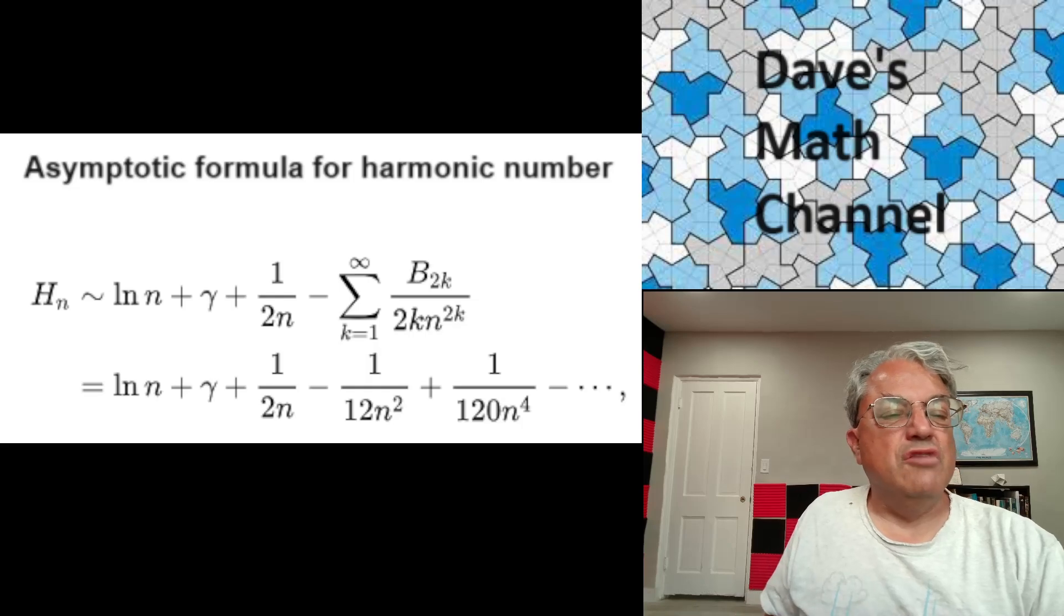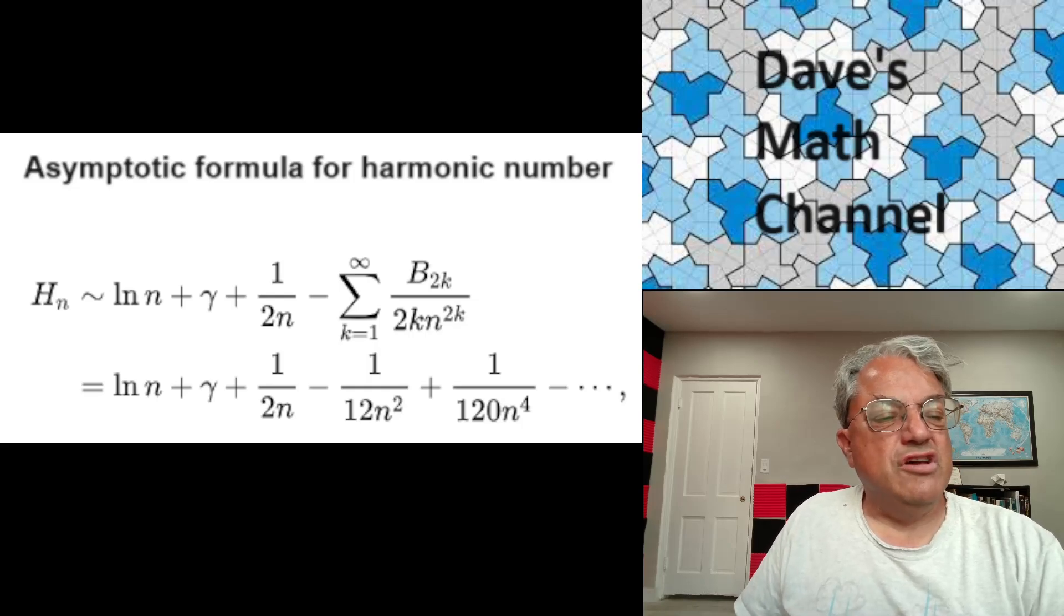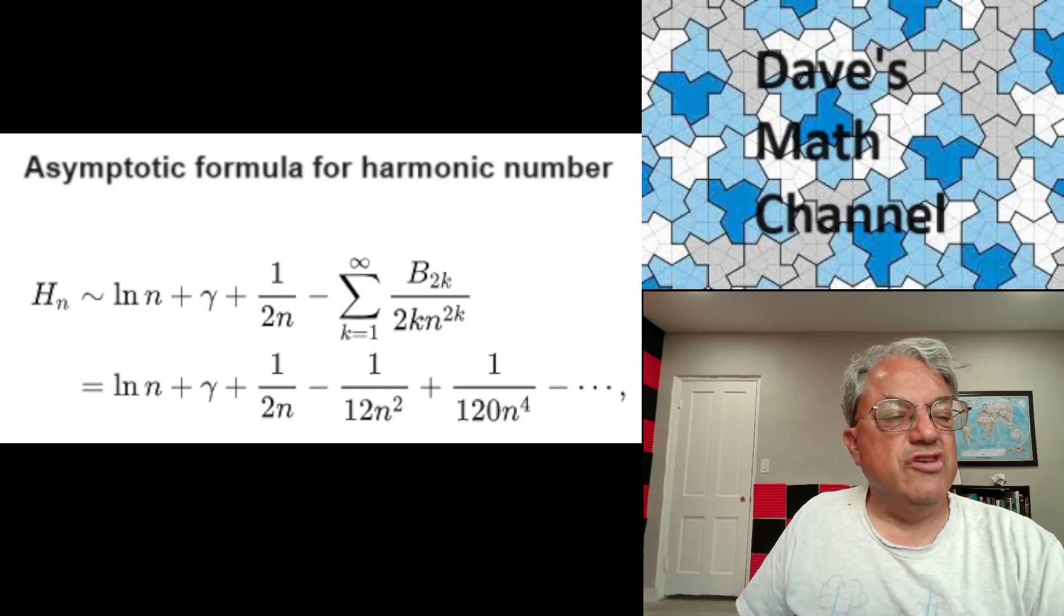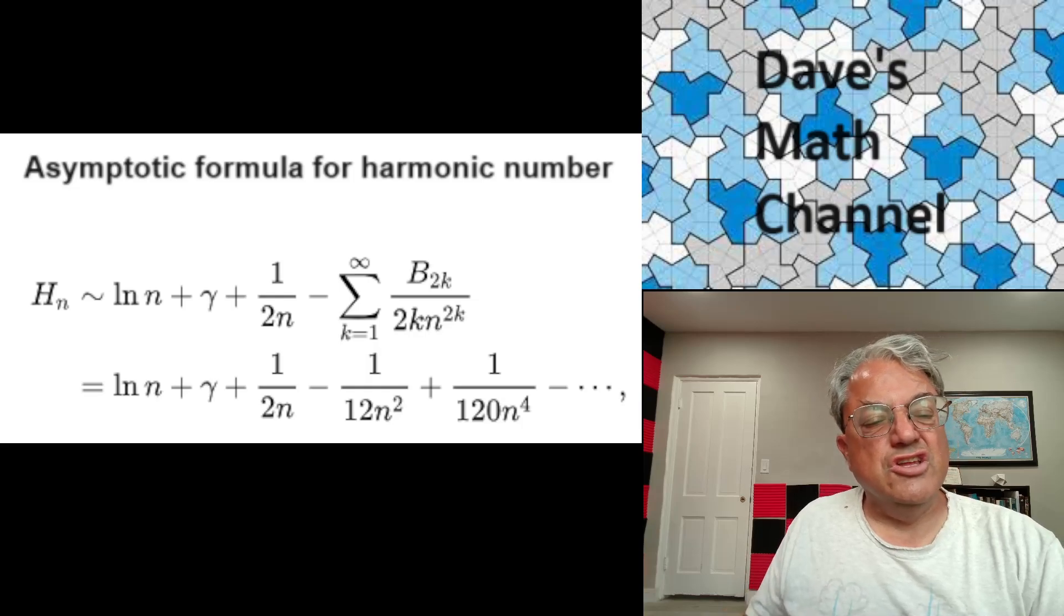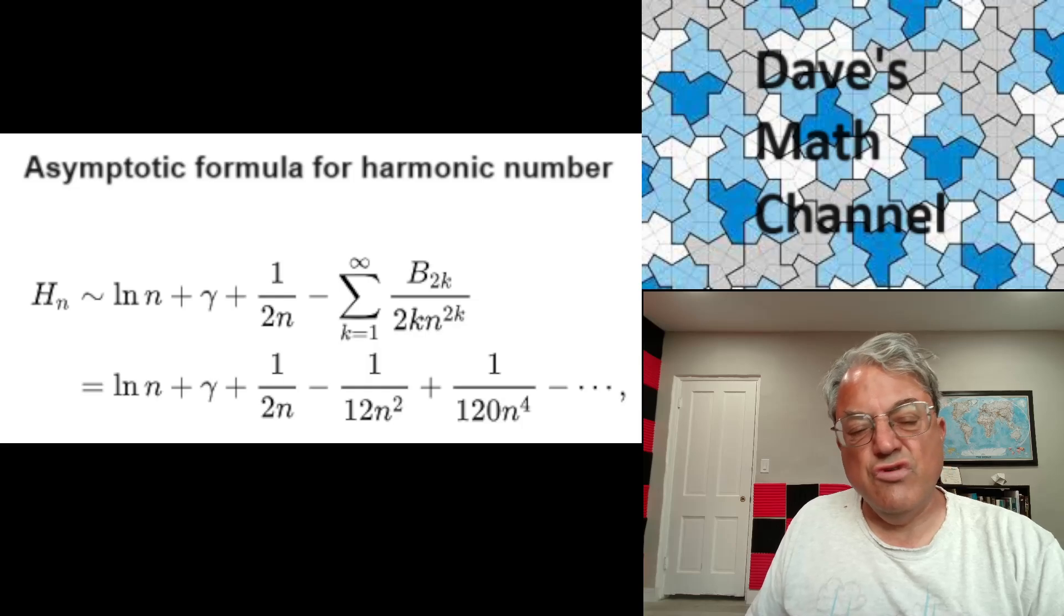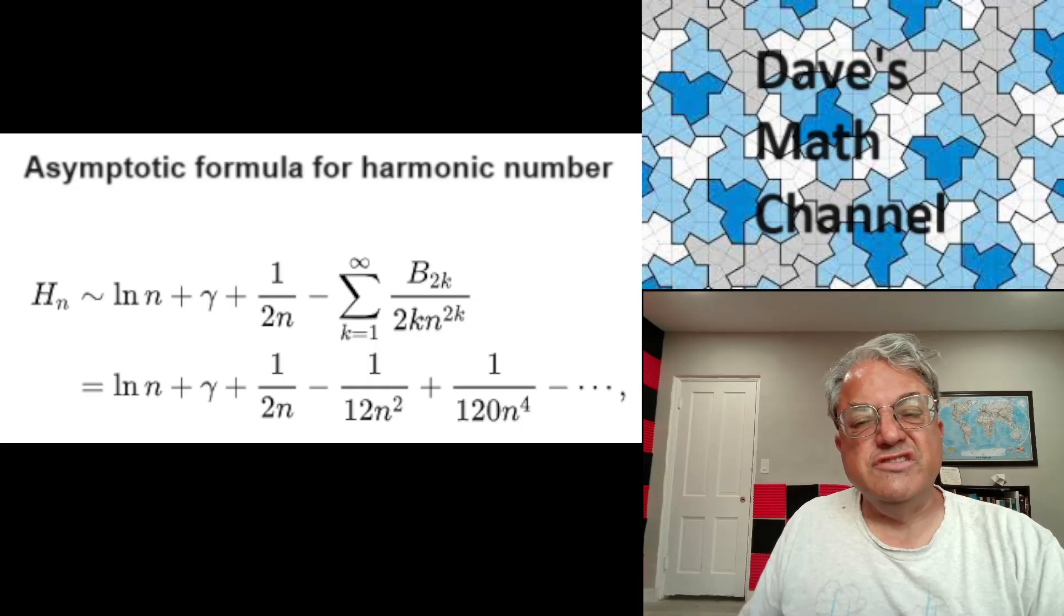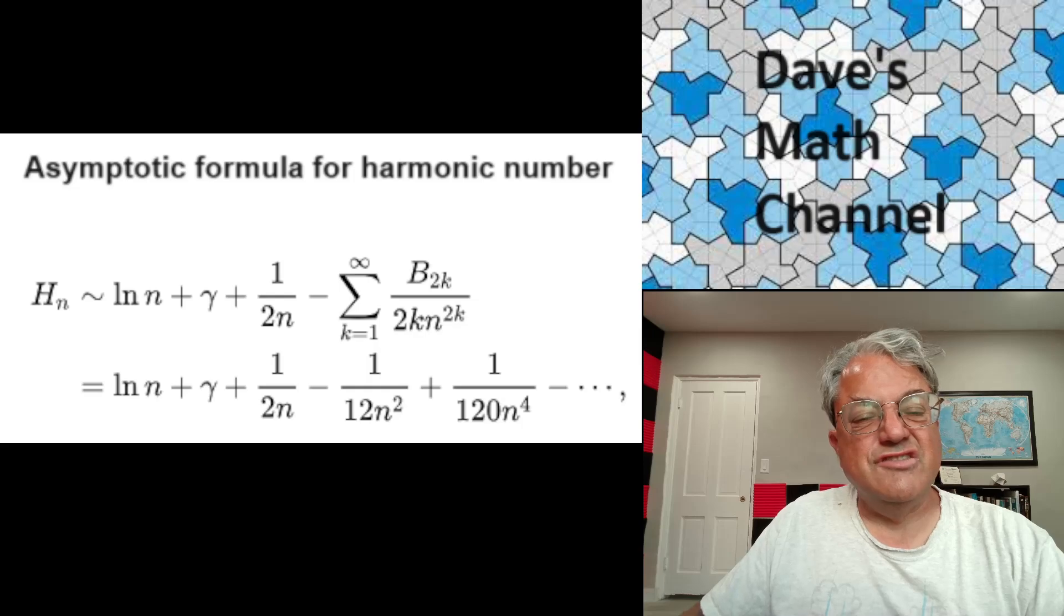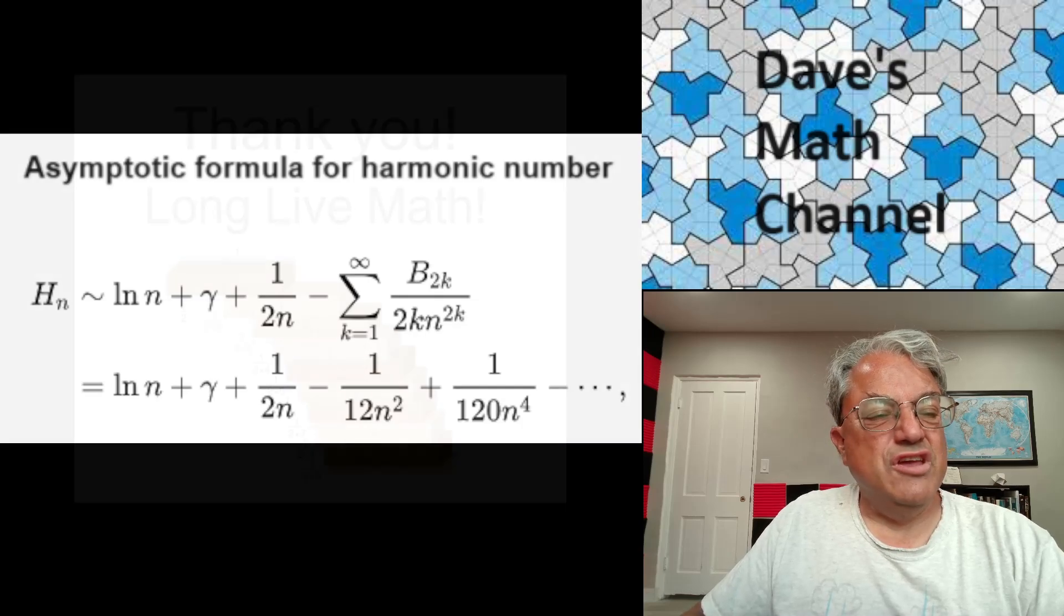And you can do even better. This is a little bit beyond the scope of what I really want to talk about today, but this is an asymptotic formula for the n-th harmonic numbers. So you can do better than ln n plus gamma. If you want it more precisely, it's ln n plus gamma plus 1 over 2n minus the series, which I'm not even going to talk about. But you can write in as many terms of this series as you want, and therefore you can estimate the n-th harmonic number as precisely as you want. I just thought I'd show that to you in case you're interested.